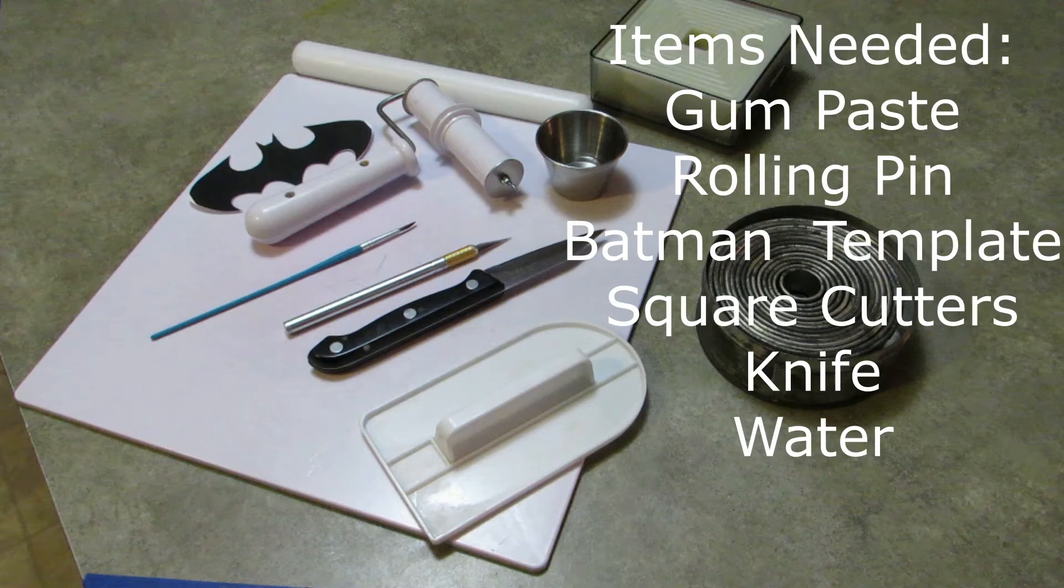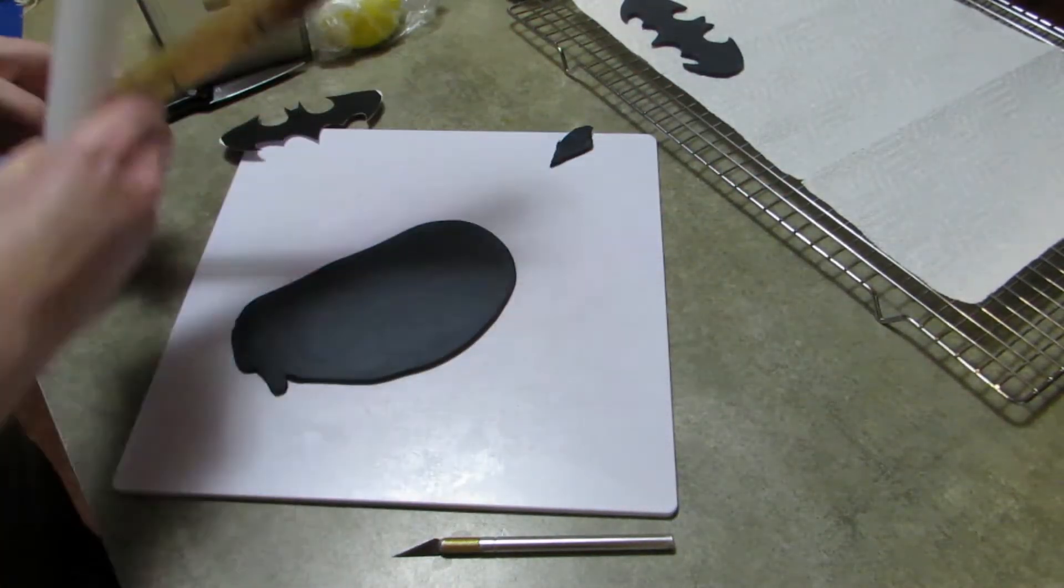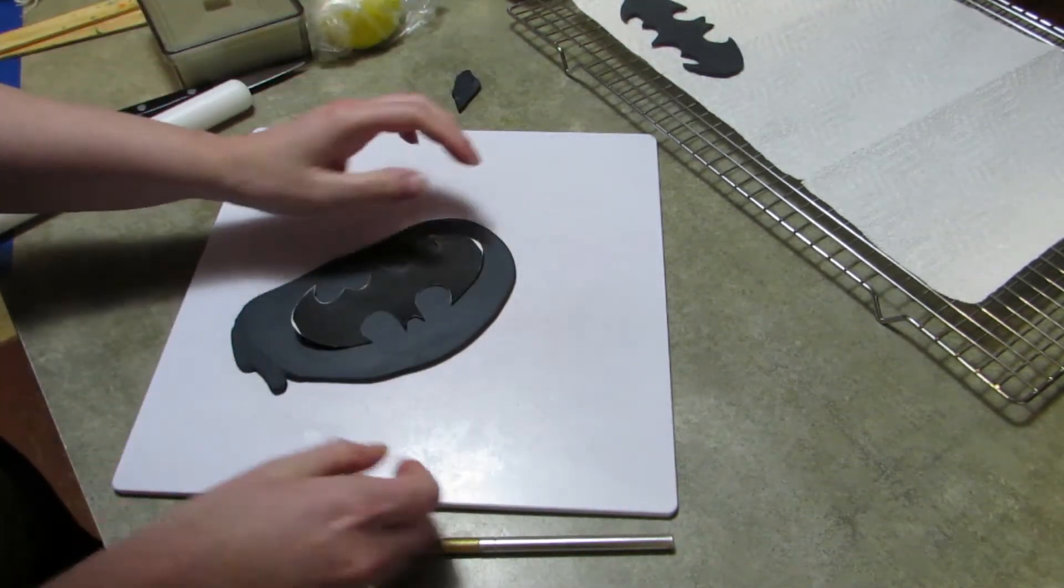Today I'm going to show you how to make Batman decorations for a birthday cake out of gum paste. I have a list of the things that you're going to need right there. The Batman template is actually super easy - just go online, print something out whatever size you need, cut it out and use that. You don't have to go buying anything special, so it's easy.